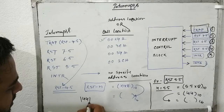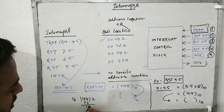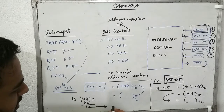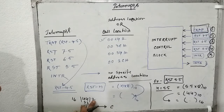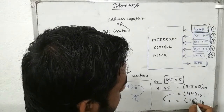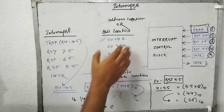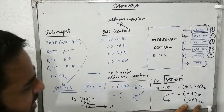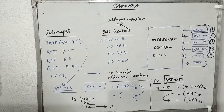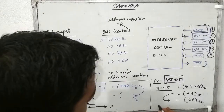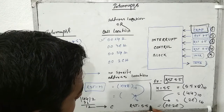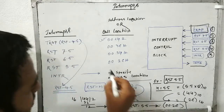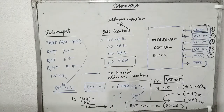44 divided by 16 gives quotient 2 and remainder 12. In hexadecimal, 12 is written as C — since 10 is A, 11 is B, and 12 is C. The remainder goes first, so we get 2C. Since these are 16-bit addresses, the upper 8 bits are 00, giving us 002C. So for RST 5.5, the address location is 002C — which matches the chart.